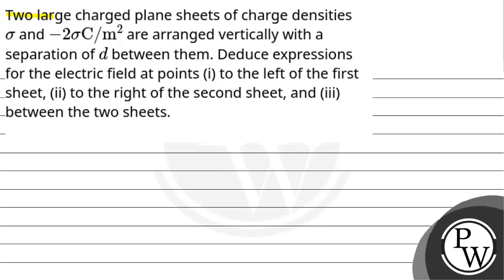Let us read this question. Two large charged plane sheets of charge density sigma and minus 2 sigma coulombs per meter squared were arranged vertically with a separation of d between them. Find the expression for the electric field at points to the left of the first sheet, to the right of the second sheet, and third, between the two sheets.